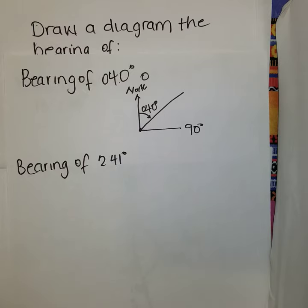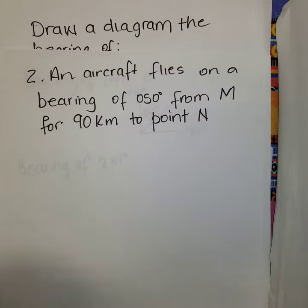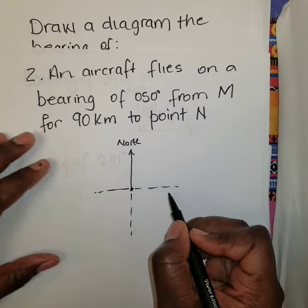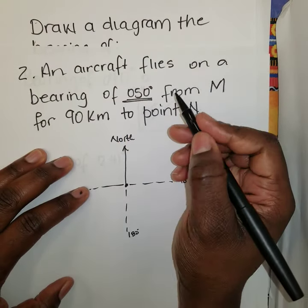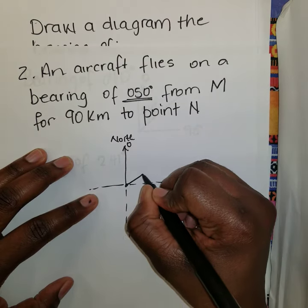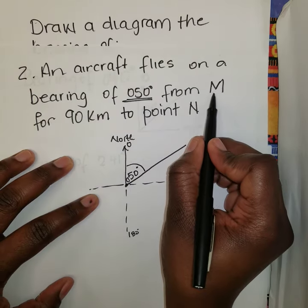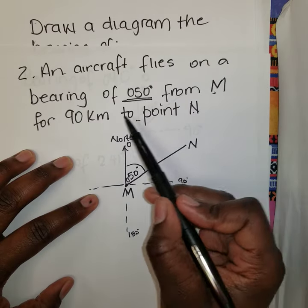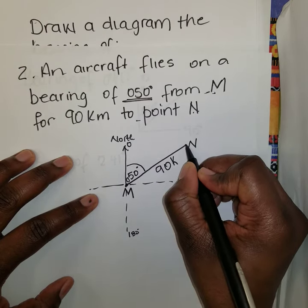For example, an aircraft flies on a bearing of 50 degrees from M for 90 kilometers to N. We draw our north line, then line up the cardinal points with the known degrees to identify where 50 degrees falls — it's between zero and 90. The starting point is M and where you stop is N. The distance MN is 90 kilometers along this line.